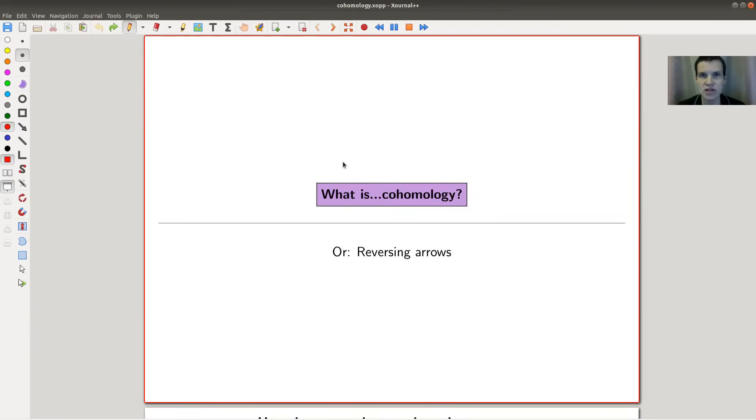Okay, welcome everyone to my continuation of what is algebraic topology. Today's topic is cohomology. So not homology, but cohomology. Or as a lot of people would like to call it, including myself, reversing arrows. So the co is usually referring to reversing some arrows.